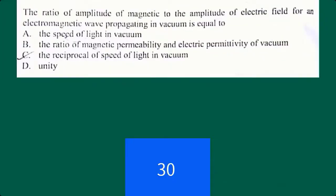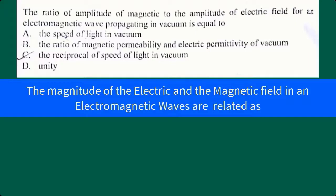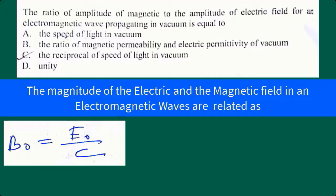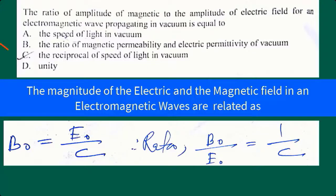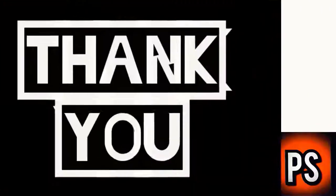In this question, the ratio of amplitude of magnetic field to the amplitude of electric field for an electromagnetic wave propagating in vacuum is required. From the chapter on electromagnetic waves, the magnitude of electric and magnetic fields in an electromagnetic wave are related as B equals E divided by c, where B and E represent magnetic and electric fields. Therefore, the ratio of magnetic field to electric field equals 1/c, which is the reciprocal of the speed of light in vacuum.